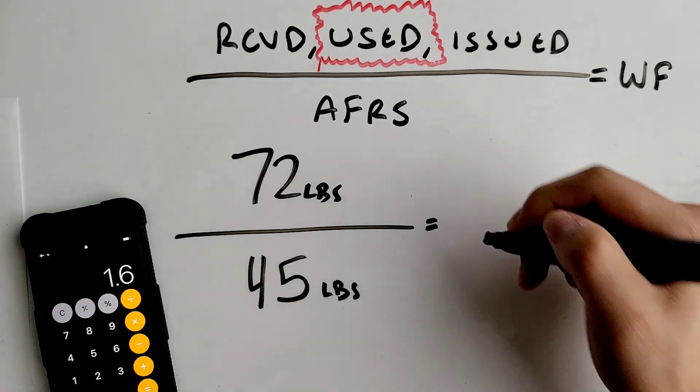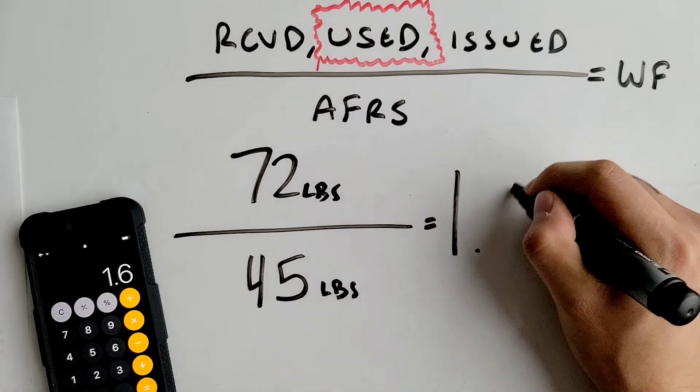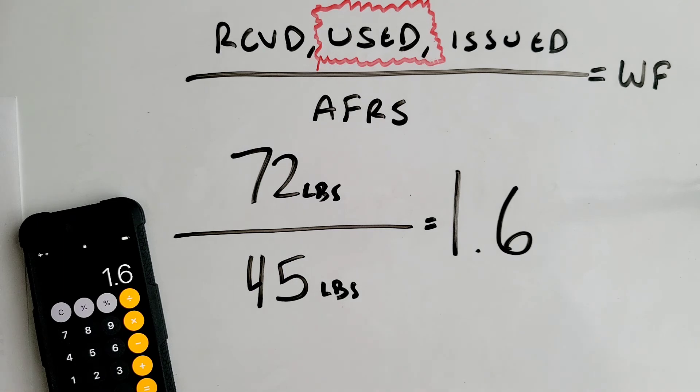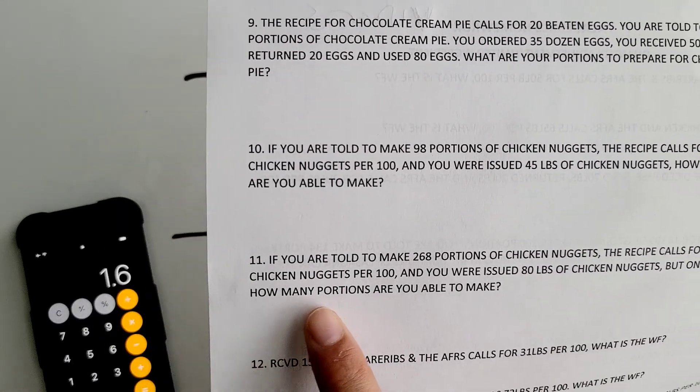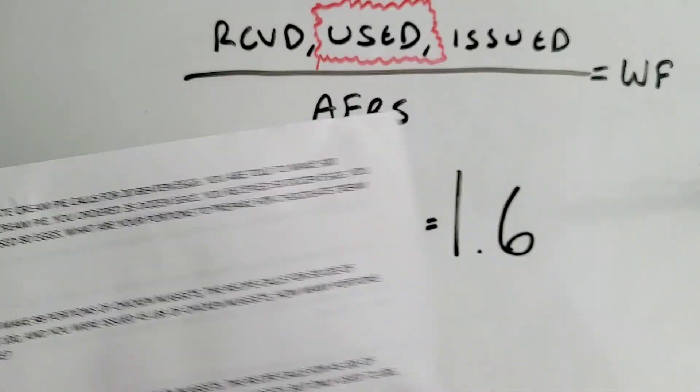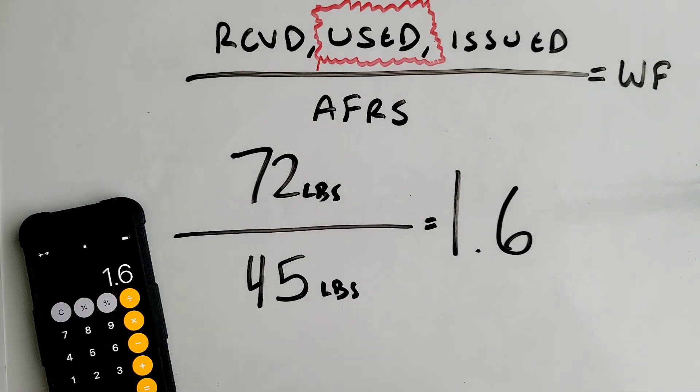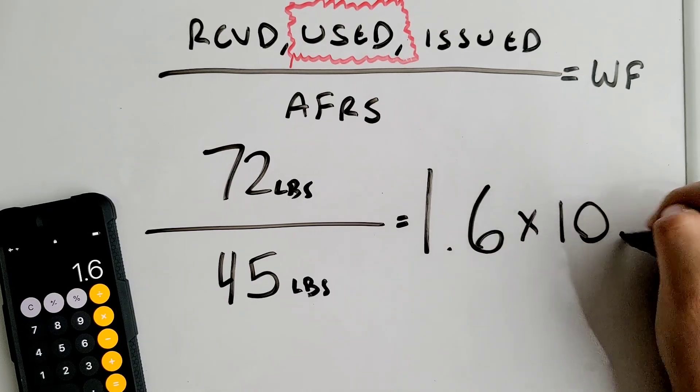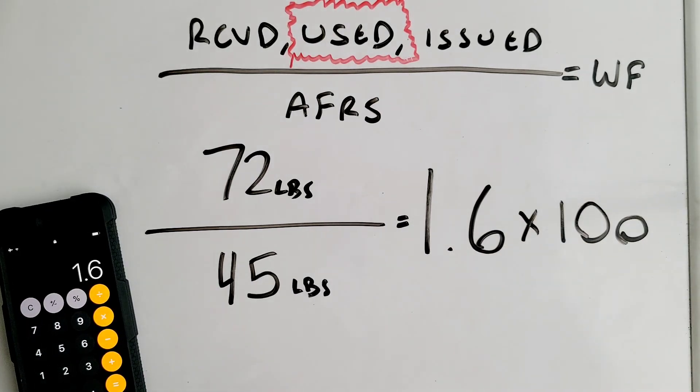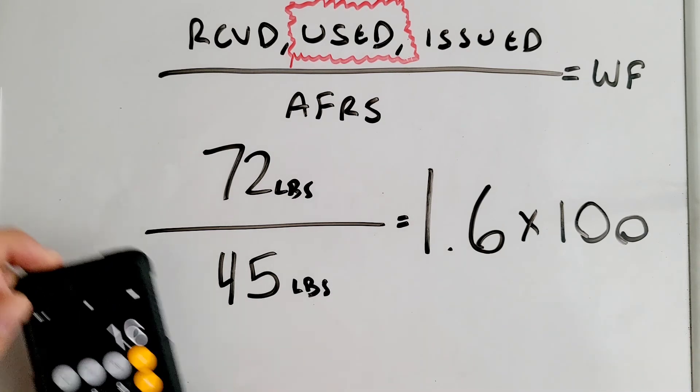But your question isn't asking for that - it's asking how many portions you're able to make. All you have to do is multiply your working factor by 100 in order to get how many portions you're able to make. You could do that in your head or just multiply by 100 on your calculator.